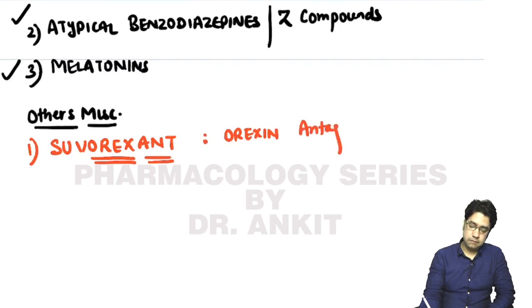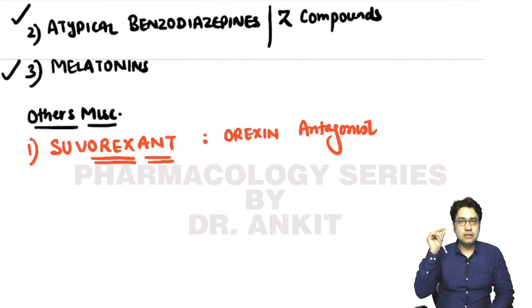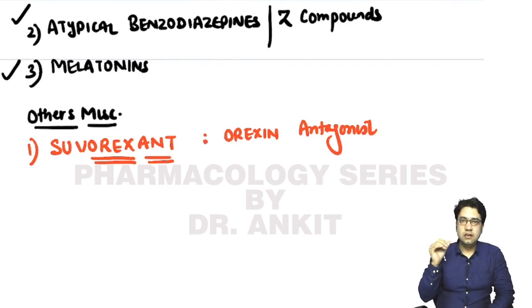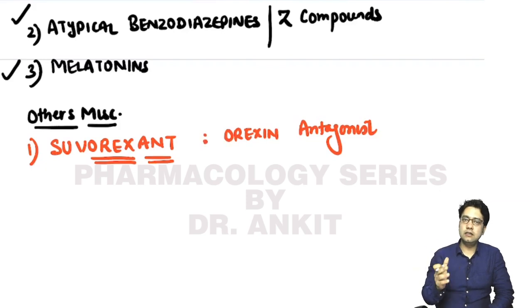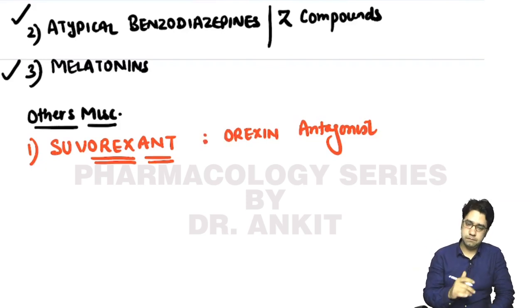Suvorexant blocks the receptors of orexin. Orexin is a neurotransmitter in our brain that maintains wakefulness. Hence, if you block the orexin receptor, the person will fall asleep.